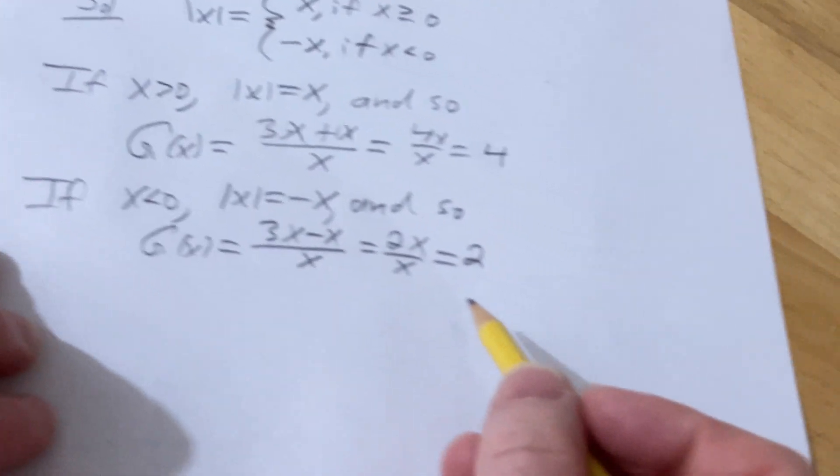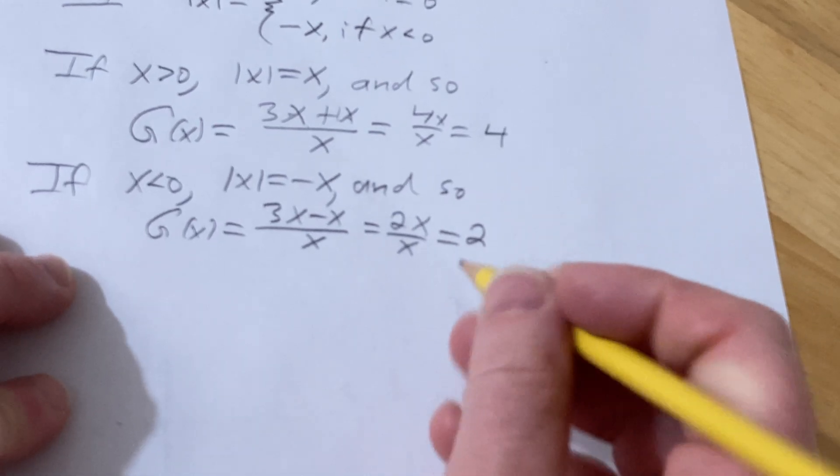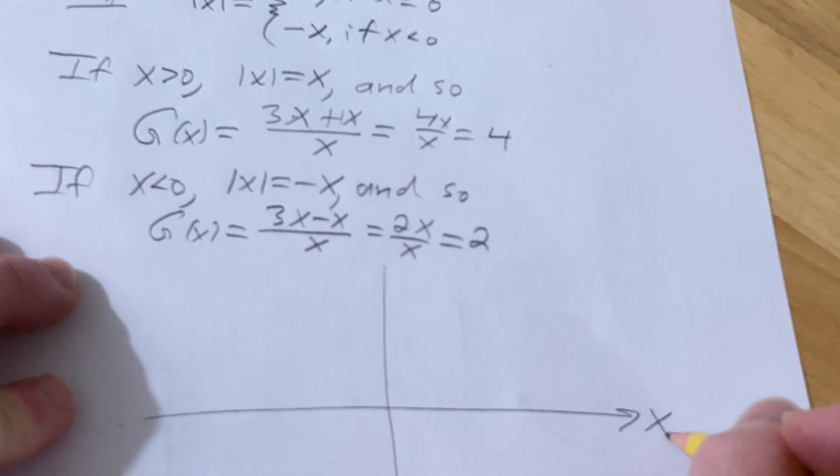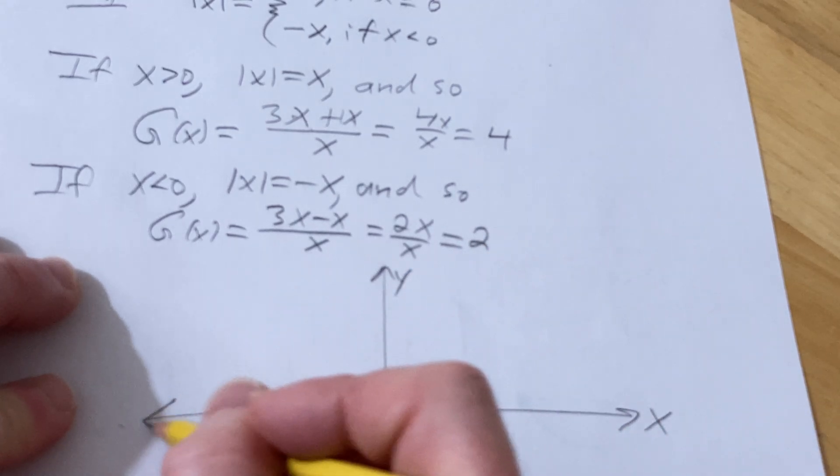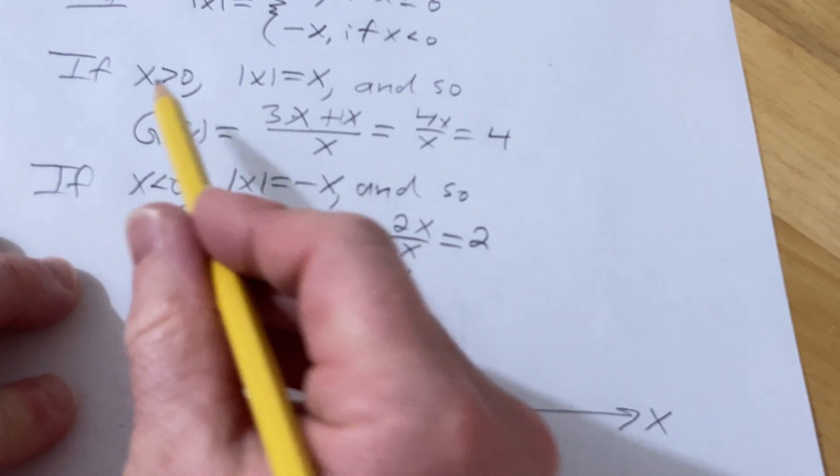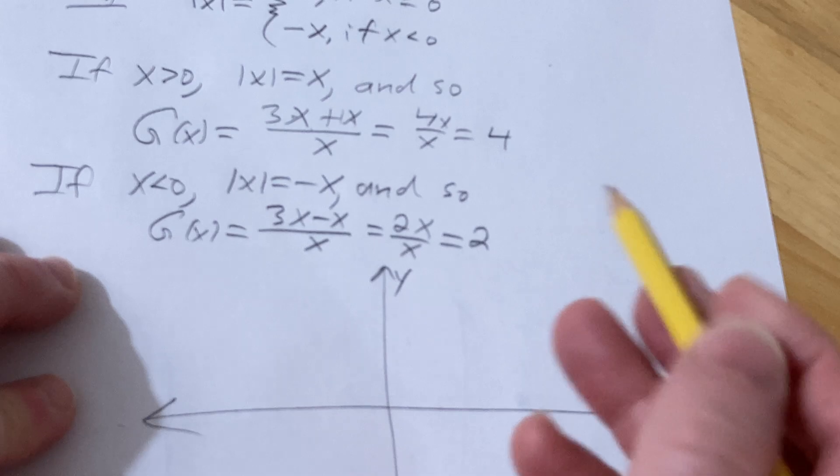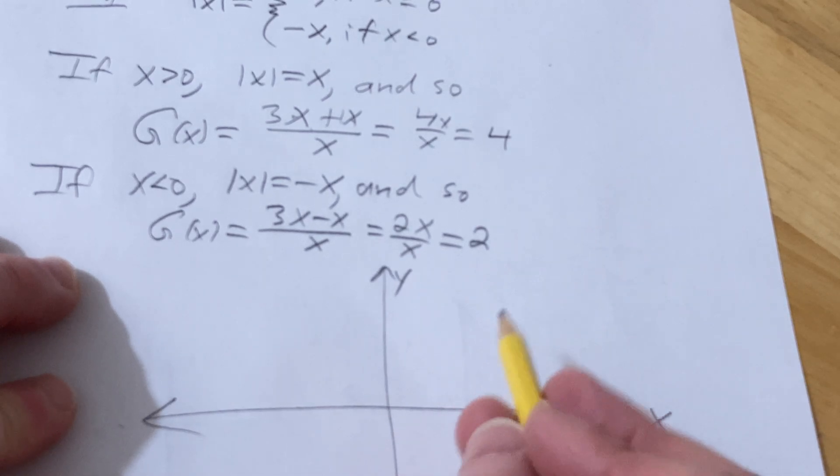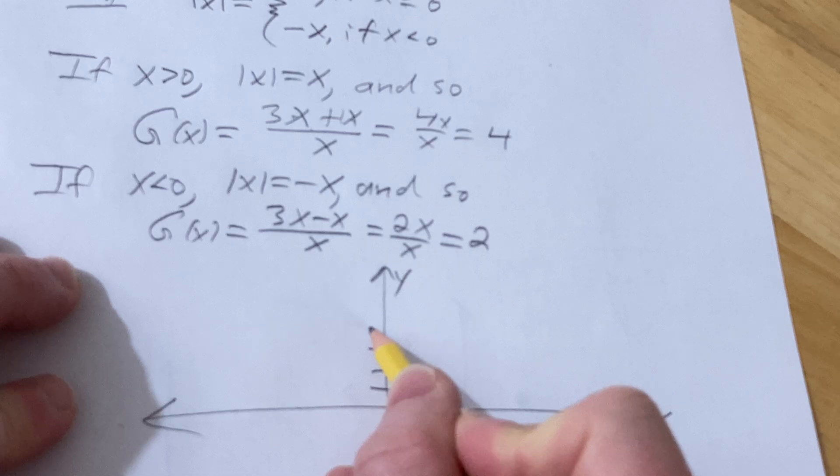Using this information now, we can graph it. Here's x, here's y. For positive values of x, it's 4. So basically 1, 2, 3, 4.